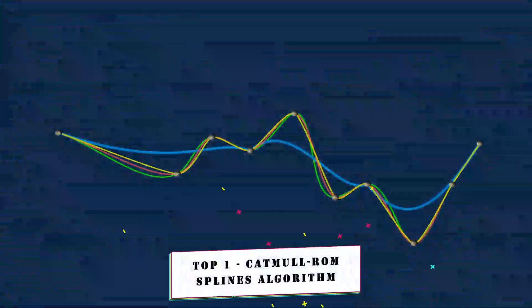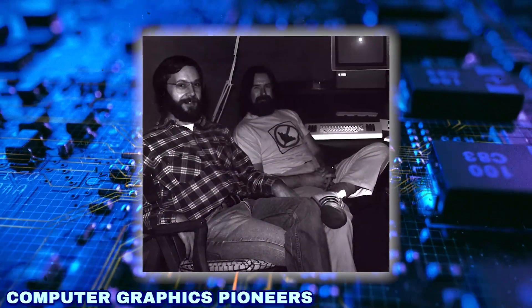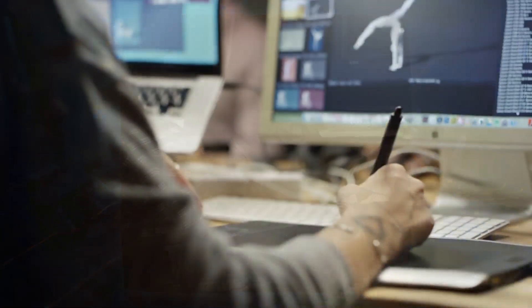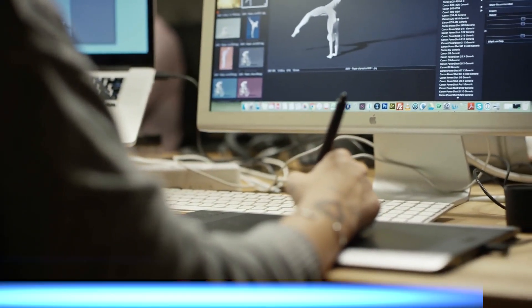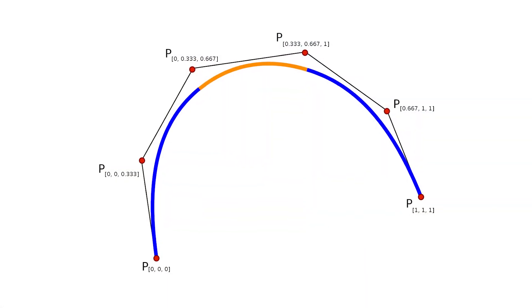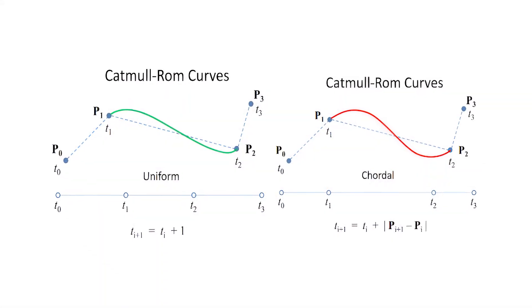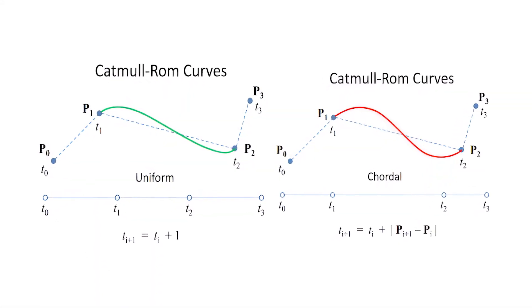Top 1. Catmull-Rom Splines Algorithm. Catmull-Rom Splines, named after computer graphics pioneers Edwin Catmull and Alvy Ray Smith, are a class of mathematical curves widely used in computer graphics and animation. These splines are a type of interpolation spline. That is, they define a smooth curve that passes through a specific set of points called control points.